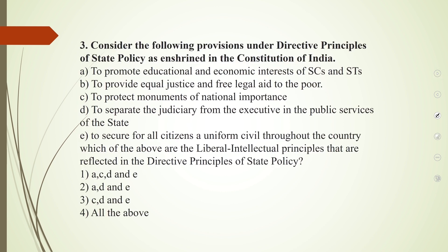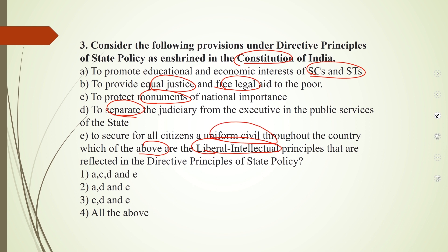The third question asks us to consider the following items under Directive Principles of State Policy as entered in the Constitution, and identify which fall under liberal intellectual principles. The five options are: one, promote education and economic interests of SC/ST; two, equal justice and free legal aid to poor people; three, protect monuments of national importance; four, separate judiciary from the executive in public services of the state; and five, secure uniform civil code throughout the country.